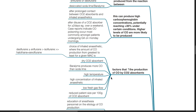Factors that increase the production of carbon monoxide by CO2 absorbents: choice of inhaled anesthetics — the amount of CO production from greatest to least for a given MAC is desflurane, enflurane, isoflurane, halothane, sevoflurane. Other factors include: dry CO2 absorbents, use of baralime, high temperature, high concentration of inhaled anesthetic, low fresh gas flow, and reduced patient size per 100g of CO2 absorbent.